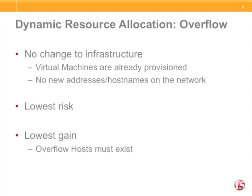To summarize, there was no change to infrastructure — no IP addressing, host name allocation, or introduction of operating systems and services. Consequently, low risk. On the other hand, we achieved a relatively low gain, as far as dynamic infrastructure is concerned, due to the need to have overflow hosts. But still an improvement over no consolidation at all.